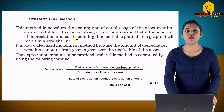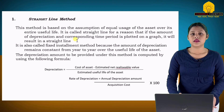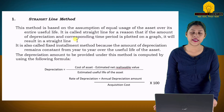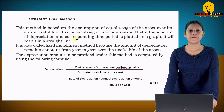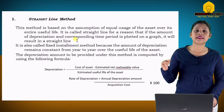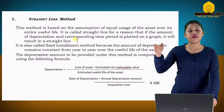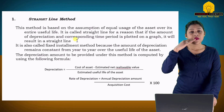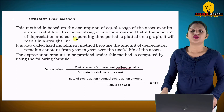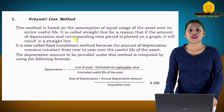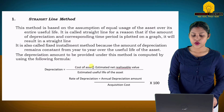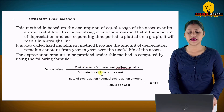Now let's see how we calculate depreciation under the Straight Line Method. The formula is: Cost of Asset minus Estimated Net Realizable Value, divided by Estimated Useful Life of the Asset. So what we need to know is: first, cost of the asset — this is the purchase value of the asset plus any modification costs. Second, estimated net realizable value — this is the scrap or residual value we expect to get when the asset's useful life is over. Third, estimated useful life — how long we expect to use the asset.